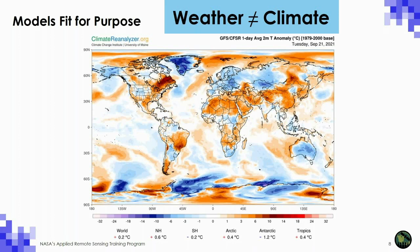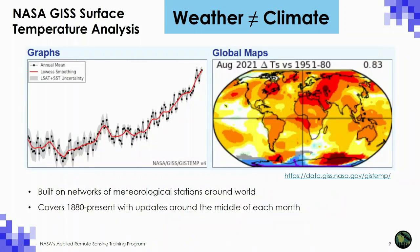Weather patterns are often what people experience, and in transitional seasons like northern hemisphere fall it can be hard to know if a given day is hot or cool or average. The Climate Reanalyzer website helps provide that context. When we look at longer-term climate trends, we see patterns showing the climate change we're here to discuss today. The NASA GISS surface temperature analysis calculates anomalies at meteorological stations around the world, with a time series that shows increasing temperatures toward the present.